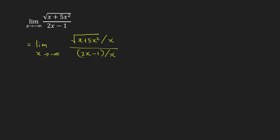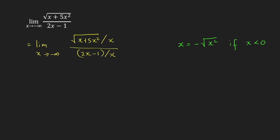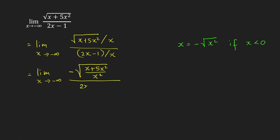But here you have to be very careful when you insert x into this radical. Because as x goes to negative infinity, x is less than 0. So in that case, x can be written as negative of the square root of x squared — this is if you have a negative x. Therefore, we can now write our expression. This is limit as x goes to negative infinity, and we can write the numerator as the square root of x plus 5x squared over x squared, but with a negative sign, since x equals negative square root of x squared. And then over the denominator, we have 2x over x minus 1 over x. This gives limit as x goes to negative infinity of the negative square root of 1 over x plus 5, over 2 minus 1 over x.